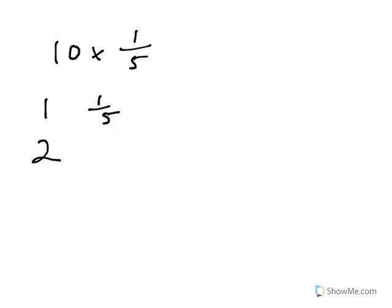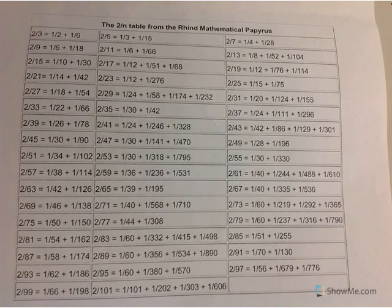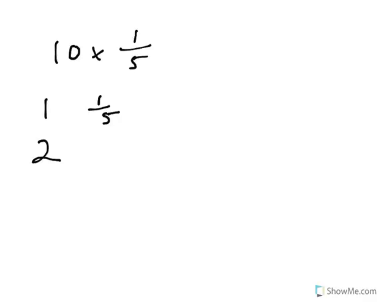So, when we wanted to do two-fifths, we don't write two-fifths. Instead, we look at our chart, and it says that two-fifths is equivalent to one-third plus one-fifteenth. So, I wouldn't write two-fifths. Instead, I'd write one-third, one-fifteenth.